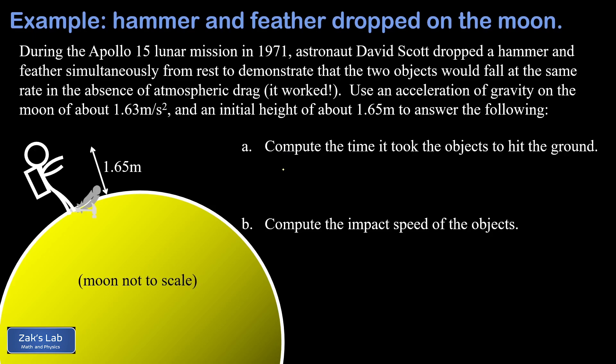We get into the kinematics problem and we're going to start by finding the fall time for these two objects. We'll start by writing down what we know. The initial height is 1.65 meters and we're going to use a coordinate system where we put zero on the ground and call upward positive.